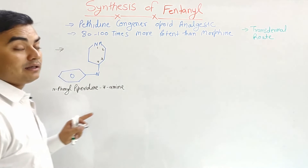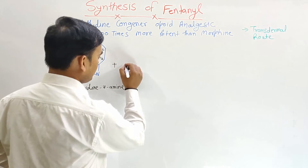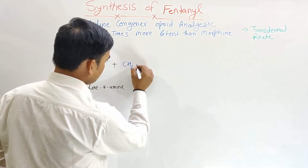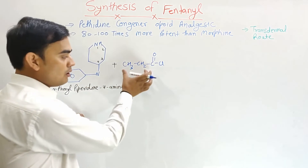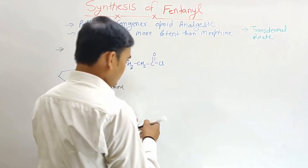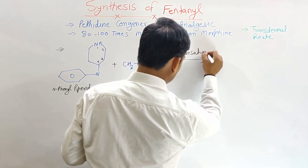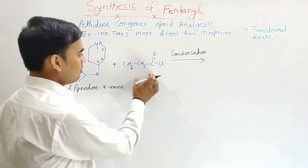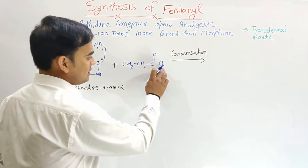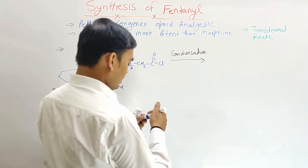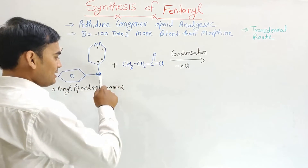This N-phenyl piperidin-4-amine reacts with propionyl chloride (CH₃–CH₂–COCl) under a condensation reaction. In the condensation reaction, the NH hydrogen is taken by the chloride and removed as HCl. So there is removal of HCl, and the carbon of propionyl chloride attaches to this nitrogen.